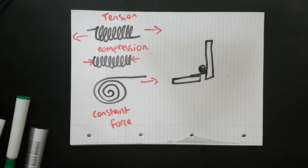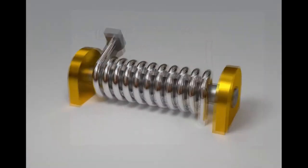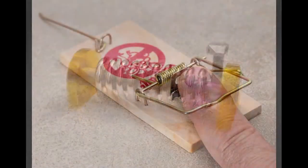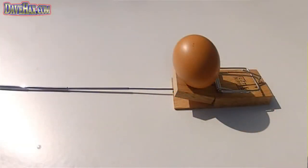Torsion springs are used to open or close things in a hinge-like manner. A perfect example is those found in a mouse trap.